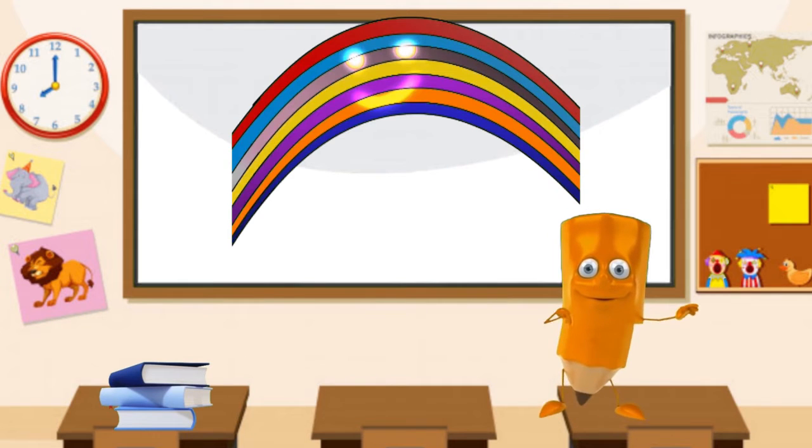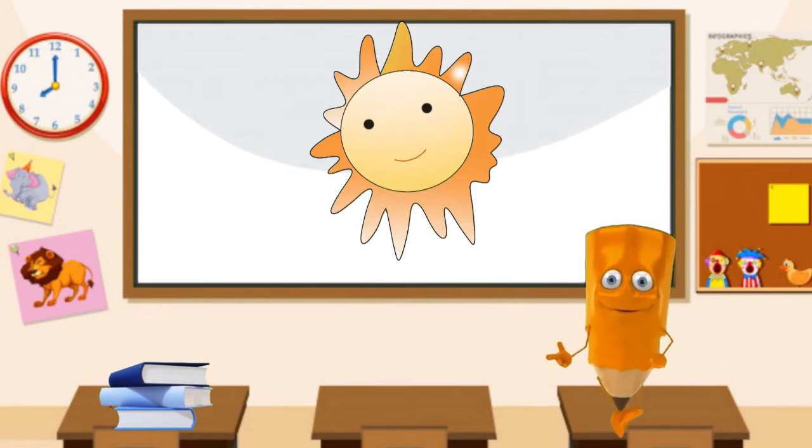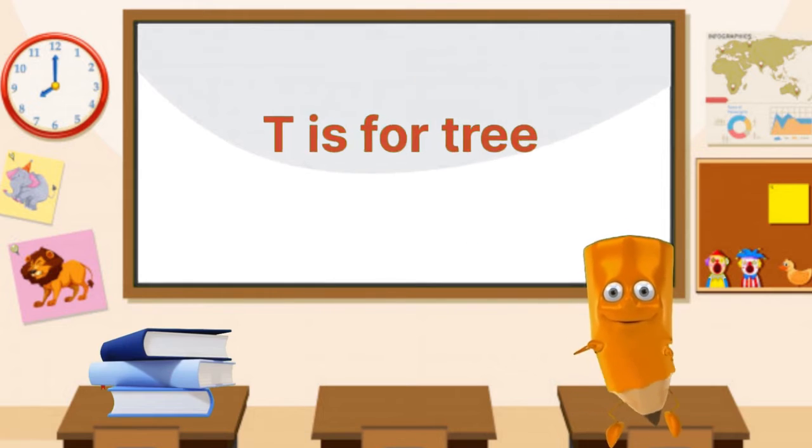R is for rainbow. S is for sun. T is for tree.